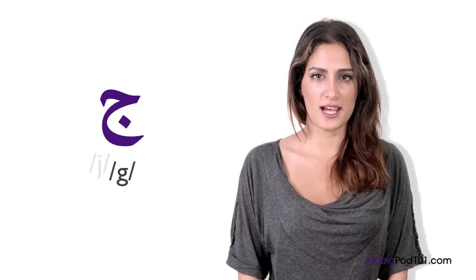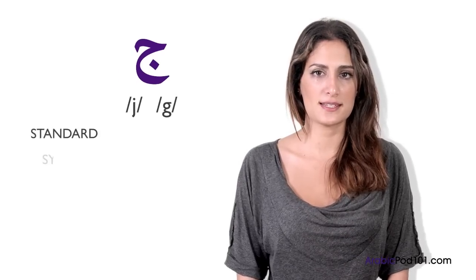Our first letter is Jīm. This one is easy to pronounce. It's somewhere between a G and a J, depending on the accent. For example, Standard Arabic, Syrian or Egyptian.